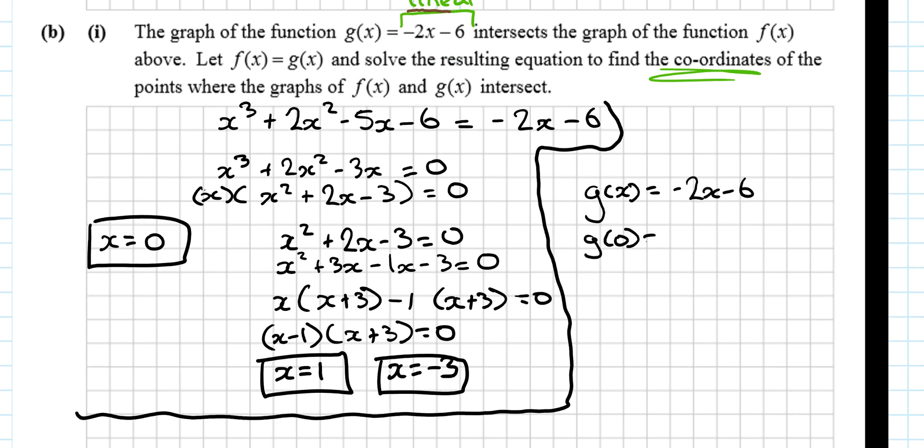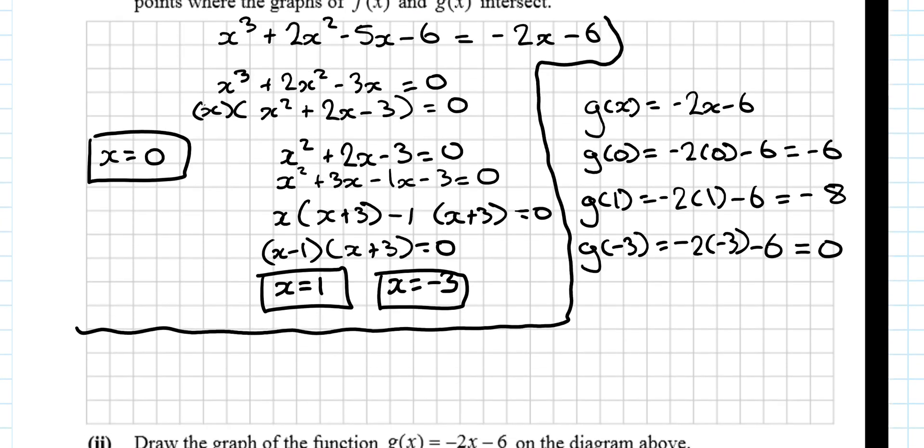g of 0 minus 2 by 0 minus 6 equals minus 6. g of 1 minus 2 by 1 minus 6 equals minus 8. And g of minus 3. g of minus 3, g of minus 2 minus 3 minus 6 is equal to 0. So, the points, then, are 0 minus 6, 1 minus 8, and minus 3, 0. There are the three points.